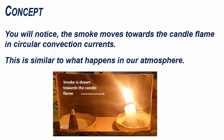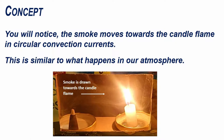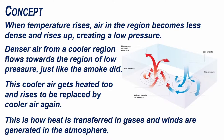You will notice the smoke moves towards the candle flame in circular convection currents. This is similar to what happens in our atmosphere. When temperature rises, air in the region becomes less dense and rises up, creating a low pressure. Denser air from a cooler region flows towards the region of low pressure, just like the smoke did. This cooler air gets heated too and rises to be replaced by cooler air again. This is how heat is transferred in gases and how winds are generated in the atmosphere.